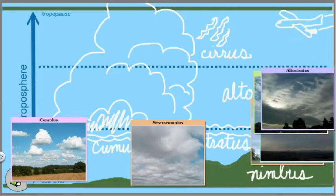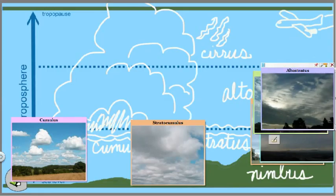Altostratus are again in the middle reaches, but they're a little bit more like stratus clouds in that they form a blanket. We see these a lot around here.